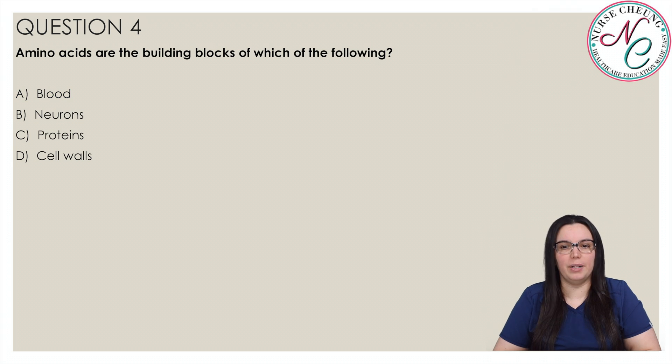Amino acids are building blocks of which of the following? Is it A: Blood, B: Neurons, C: Proteins, or D: Cell walls?